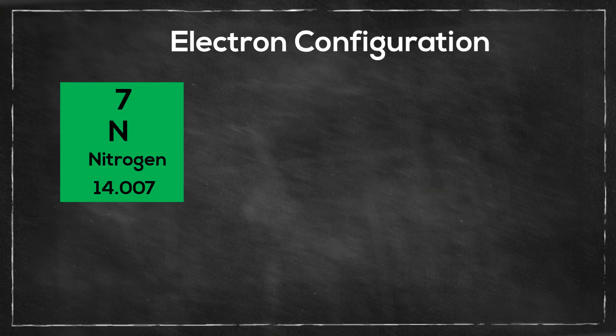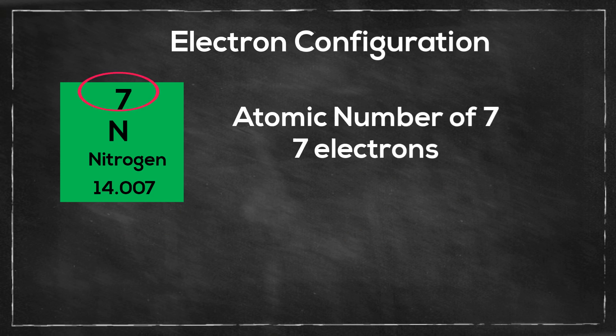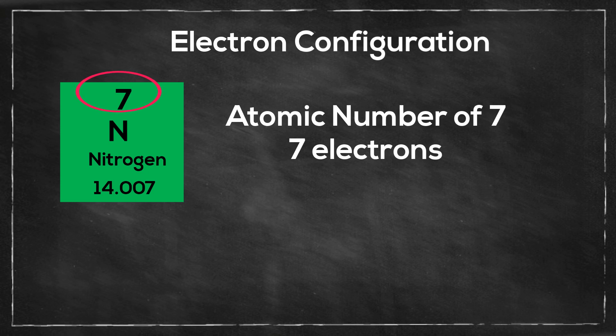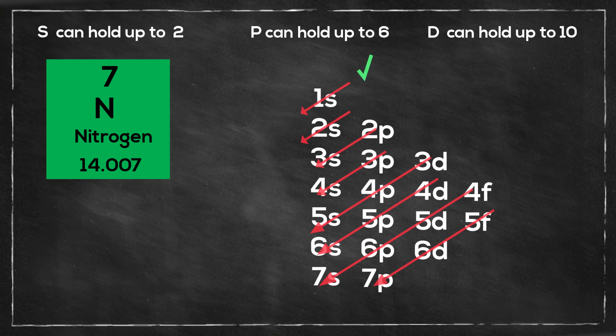So now let's take a look at nitrogen. First we need to figure out how many electrons nitrogen has, and it has an atomic number of 7, so it has 7 electrons. So I will start at 1s, so s can take up to 2 electrons, so it will be 1s2.